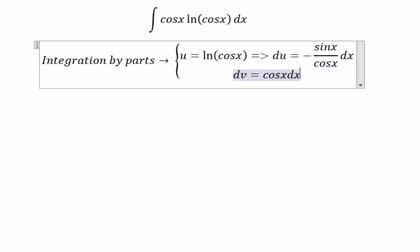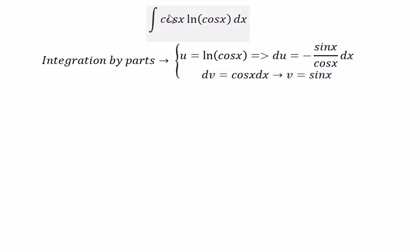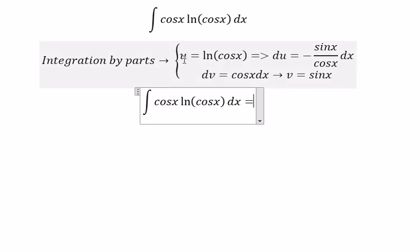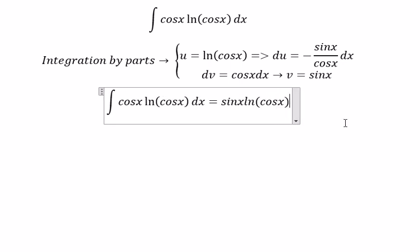So we got v equal to sine s. So we have u multiplied with v, and because we have a negative in here, we got the positive.